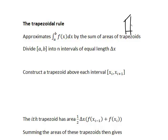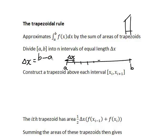The first thing we do is take the interval a to b that we are integrating over and divide it into n intervals of equal length, where each interval has length delta x. The total distance from a to b will be b minus a, since we are assuming b is greater than a. So if we are dividing this distance into n equal intervals, delta x must be b minus a divided by n.